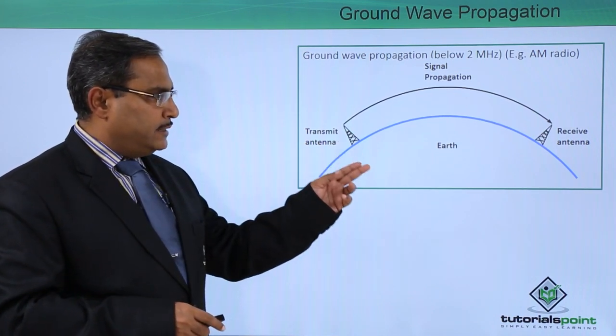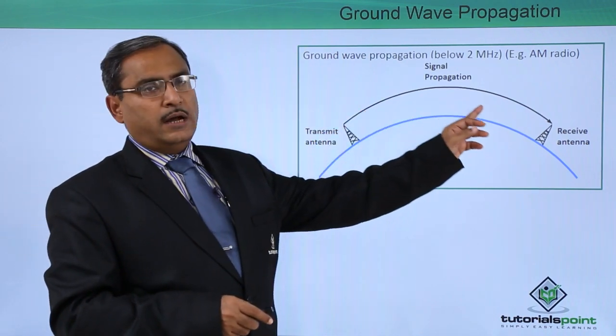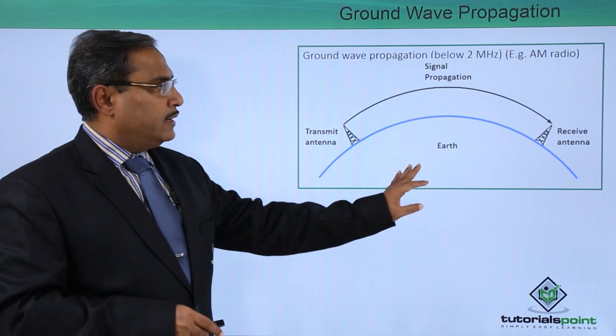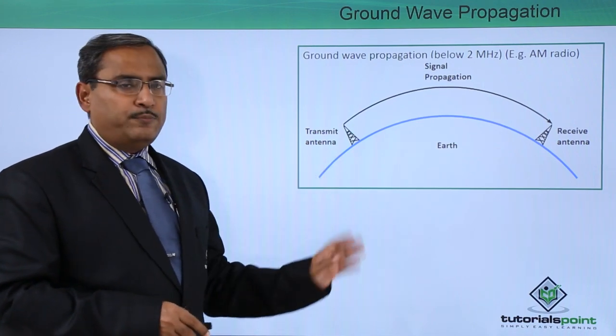This is the transmitting antenna and that is the receiving antenna, and that is the ground wave propagation. It will be done in this way and this is our earth as I have shown in the figure.